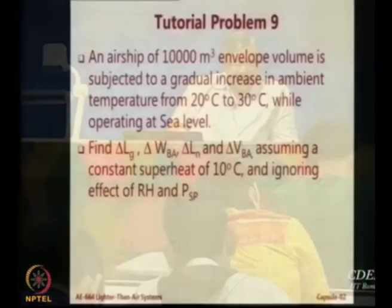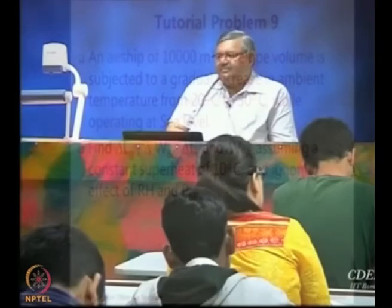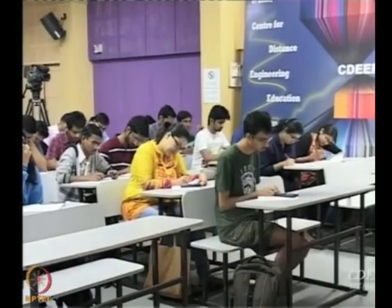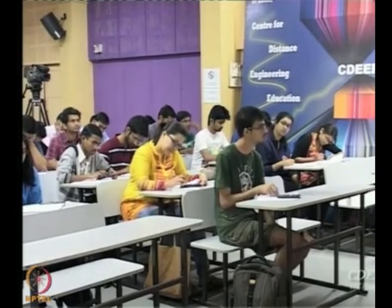The change in ballonet air weight, delta W_bA, is minus 3,649 newtons. Now let us look at the net change in static lift — this will be the change in gross lift minus the change in ballonet air weight. Earlier we got minus 3,893, and now minus 3,649, so the difference between them is the change in net static lift. Be careful about signs — will the net static lift increase or decrease?